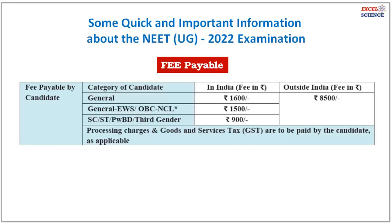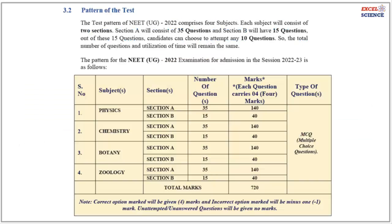Now let's learn about the fee payable for the NEET UG examination. General category candidates have to pay 1600 rupees. General EWS and OBC NCL candidates have to pay 1500 rupees. SC, ST, persons with benchmark disabilities, and third gender candidates have to pay 900 rupees.